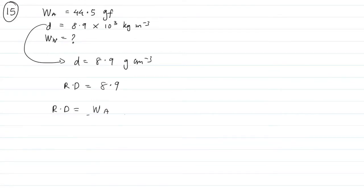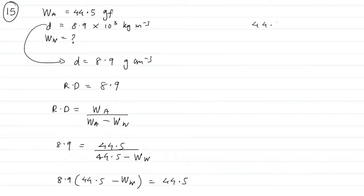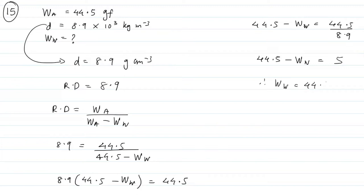Relative density equals weight in air divided by weight in air minus weight in water. So 8.9 equals 44.5 upon 44.5 minus weight in water. Therefore, 44.5 minus weight in water equals 44.5 upon 8.9, which gives 5. Therefore, weight in water will be 44.5 minus 5, which is 39.5 gram force.